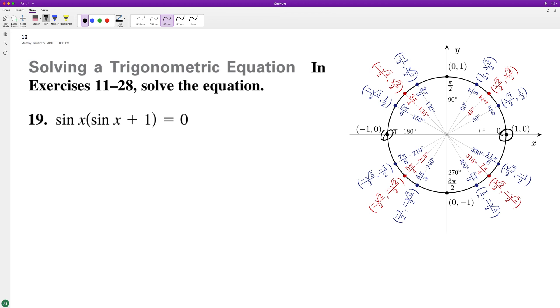And where does sine equal negative one? It equals negative one at three pi over two. So it looks like we're going to have an x plus pi.